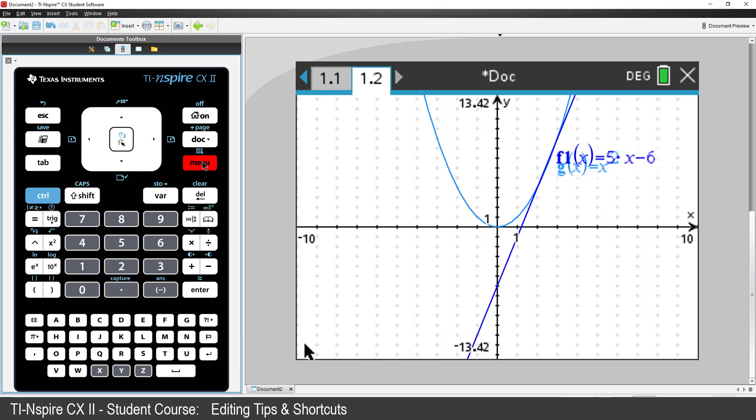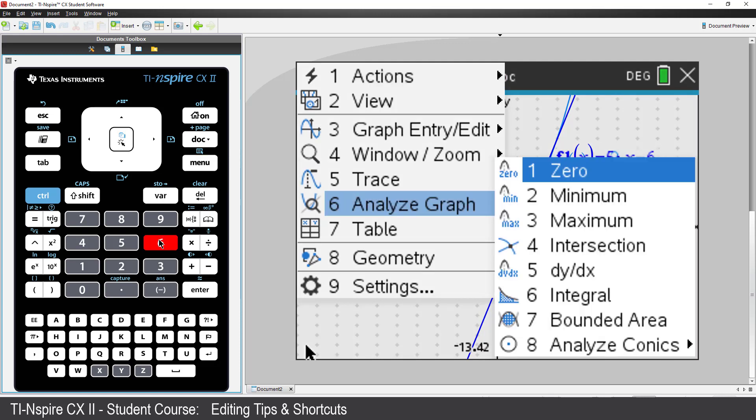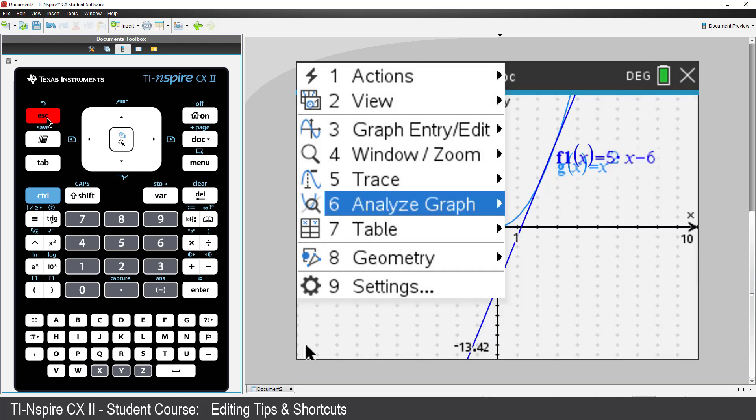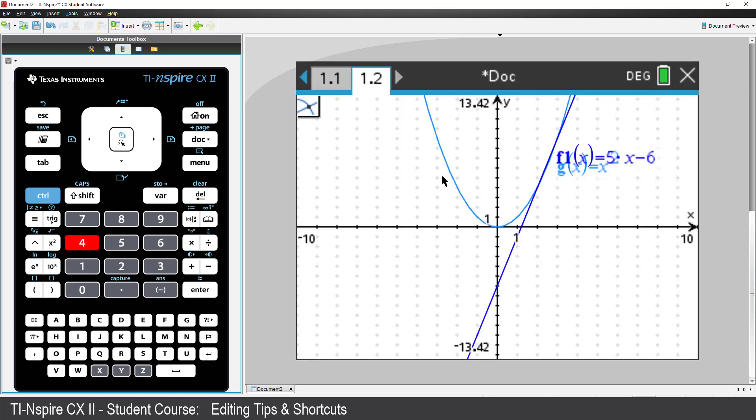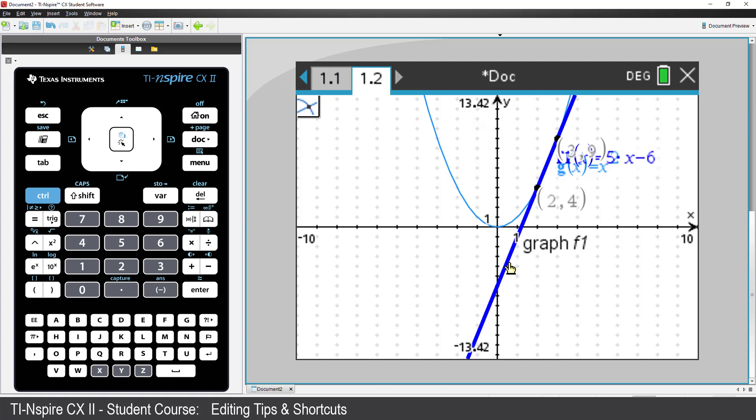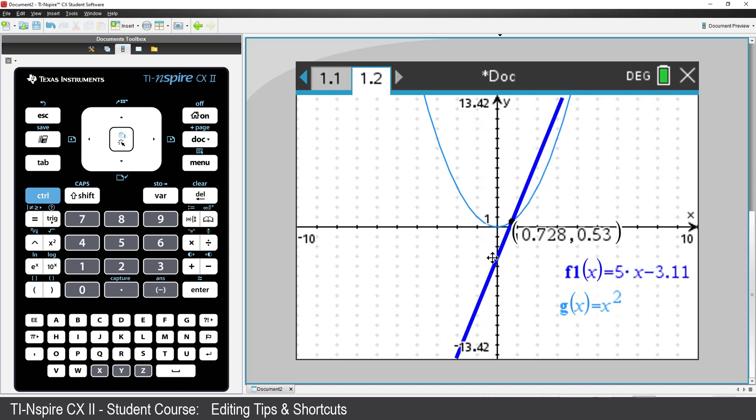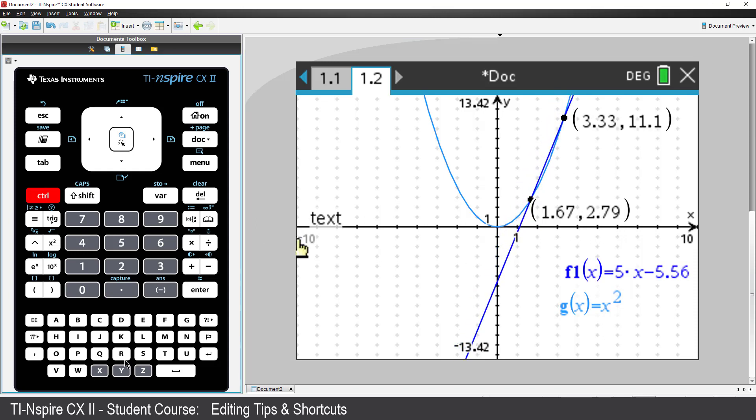Press Menu. I could select Analyze and then Points of Intersection, but I could also use the Geometry tool. Points and Lines, Intersection Point. Select the first graph, select the second graph. And there's my Points of Intersection. I can even move the graphs, and the Points of Intersection will automatically update. To put the graphs back to their previous definitions, CTRL-Z or CTRL-ESC, that's our undo.